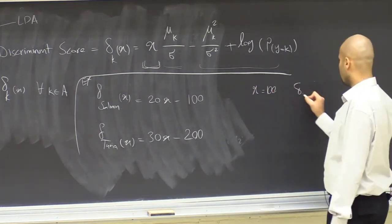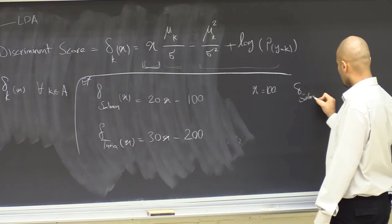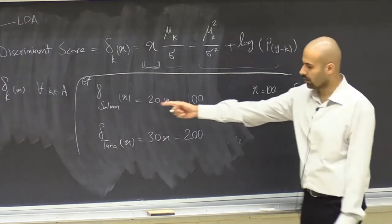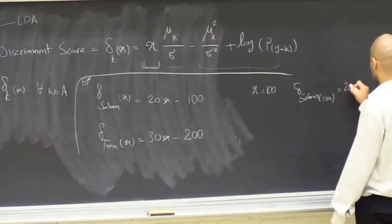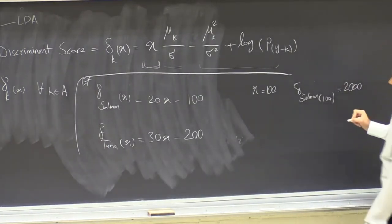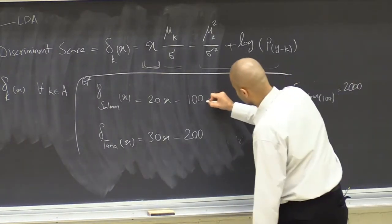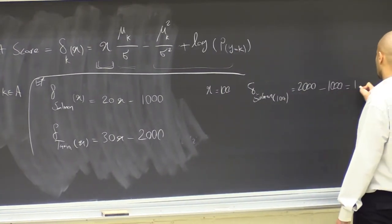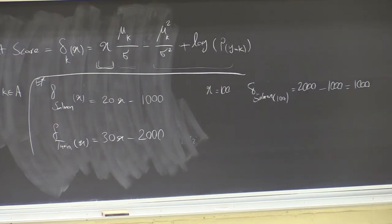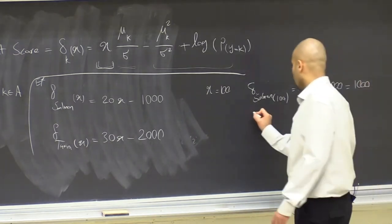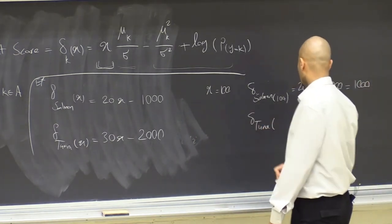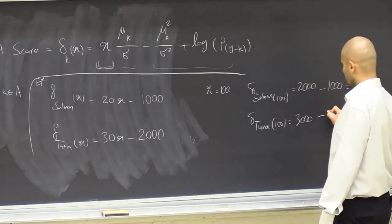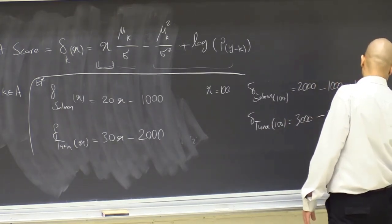For salmon with input 100: 100 × 20 = 2000, minus 1000, so the score is 1000. For tuna with input 100: it's 3000 minus 2000, which is also 1000. The score doesn't need to be a probability — it's just a value we compare.